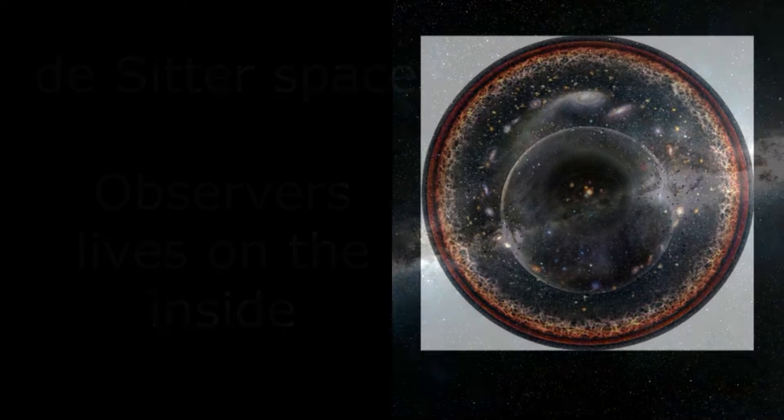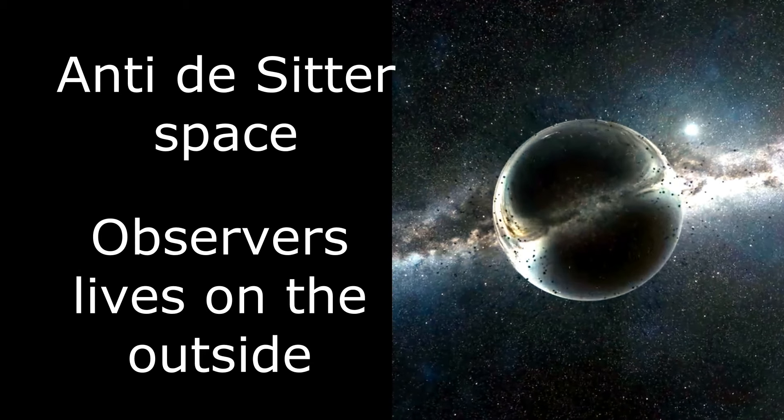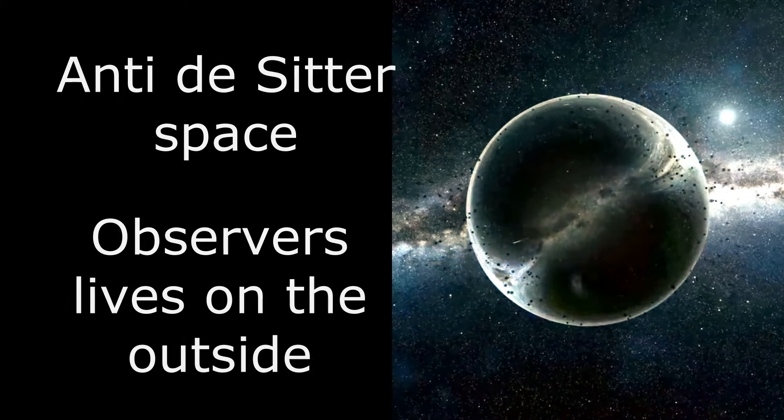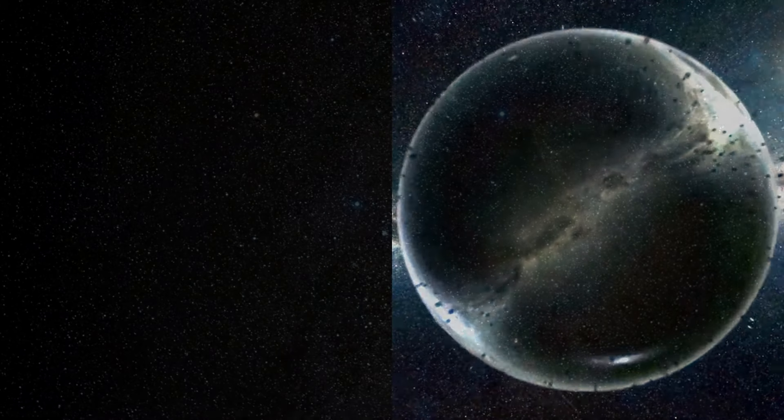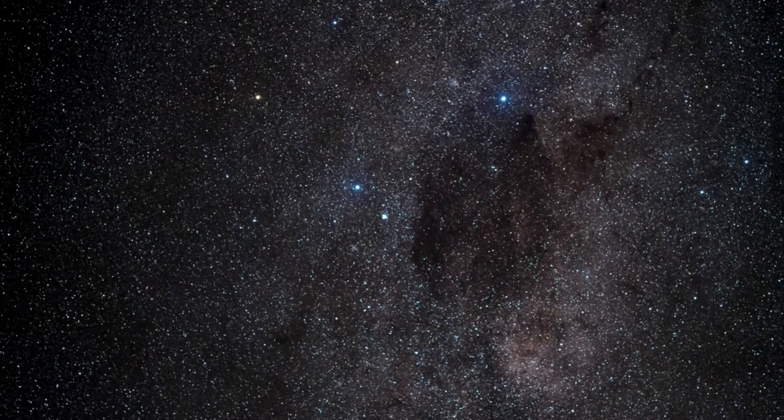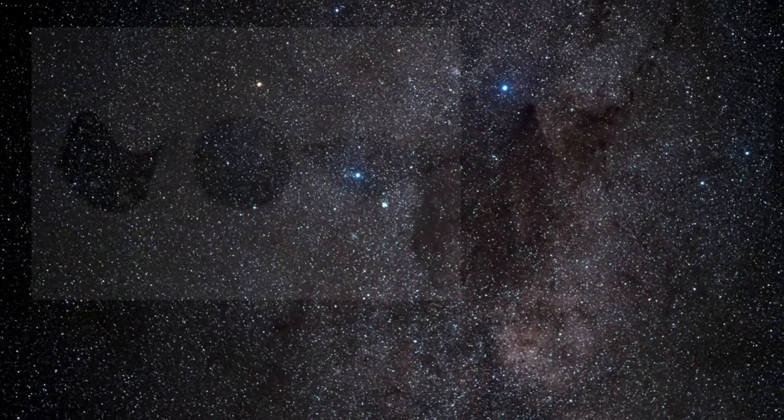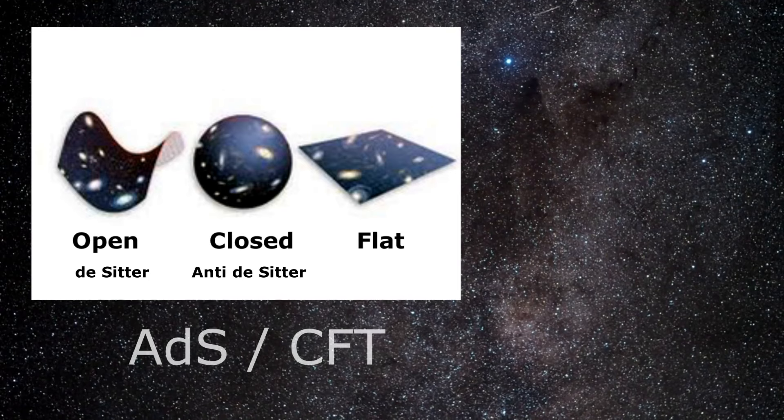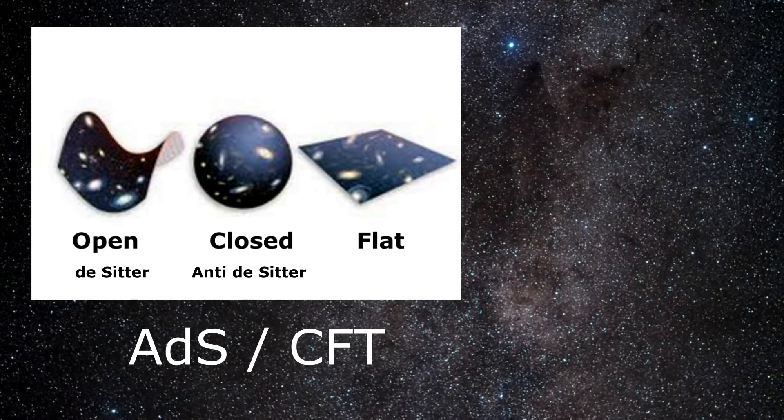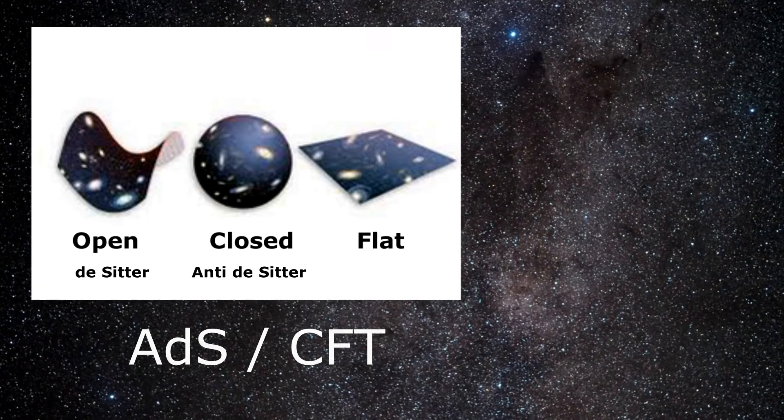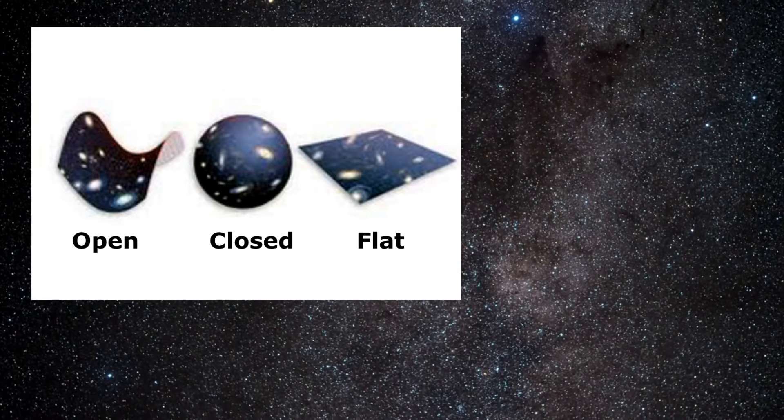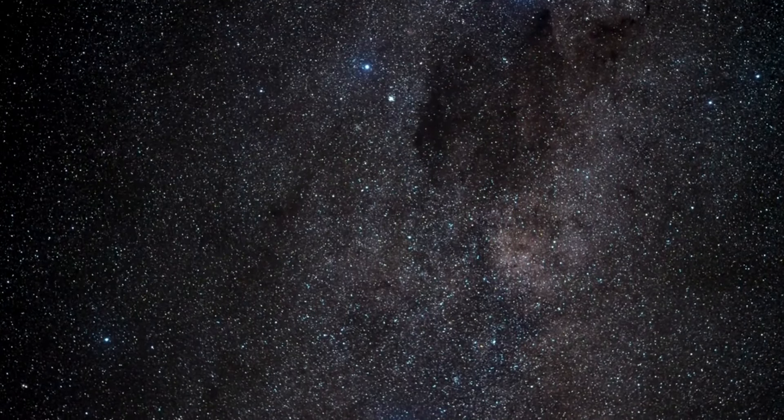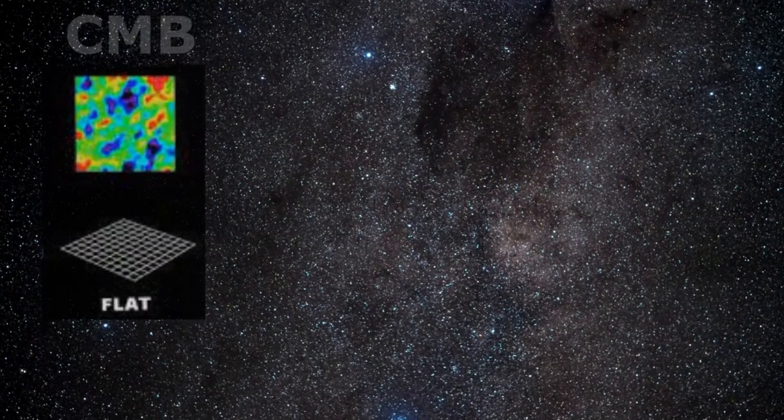On the other hand, anti-de Sitter space has a negative cosmological constant, like the interior of a black hole. In this situation, the observer is located outside the anti-de Sitter space. This type of spacetime is important in the study of theoretical physics and conformal field theories defined on the boundary of that space. In simpler terms, de Sitter space represents a universe with positive curvature, while anti-de Sitter space represents a universe with negative curvature. These concepts are fundamental in understanding the possible shapes and geometries of the universe according to general relativity.